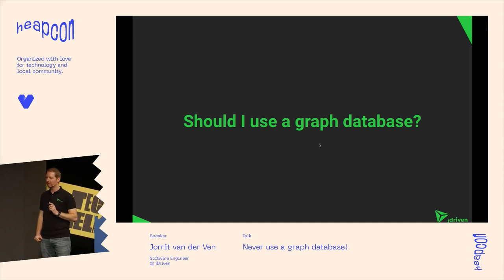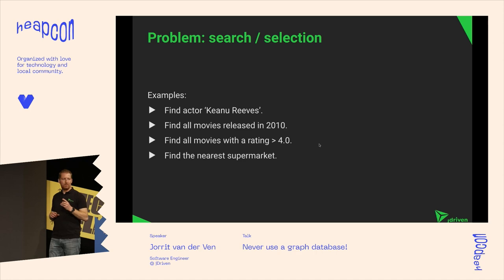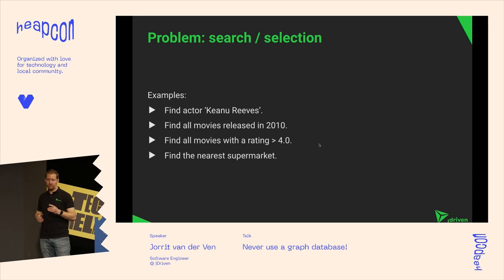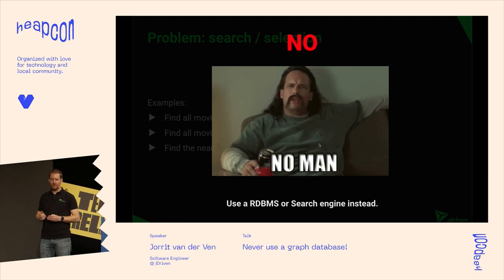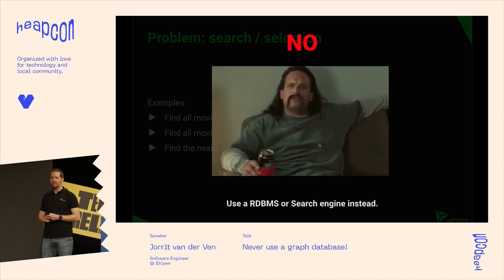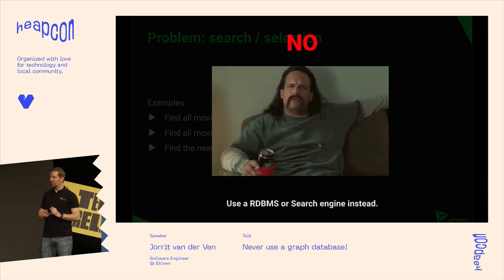Should I use a graph database? It really depends on the use case. Quiz: if your problem is a search or selection problem — give me all actors named Keanu Reeves, find all movies released in a certain year, or find me the nearest supermarket — should you use a graph database? The obvious answer is no. You're not really interested in the relationships between data; you're interested in filtering one big table. Relational databases are really good at filtering. Also, for complex searches you can use a search engine like Elasticsearch — but just don't use a graph database for that.